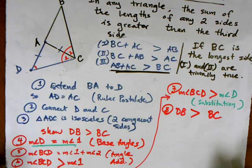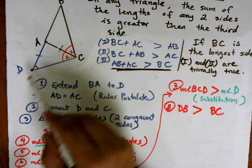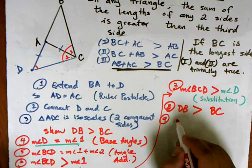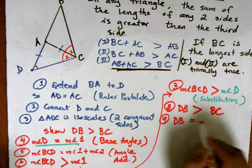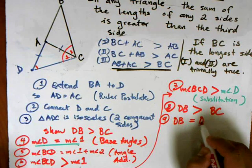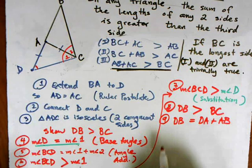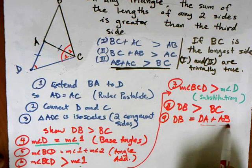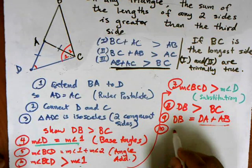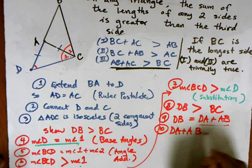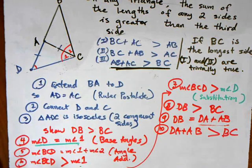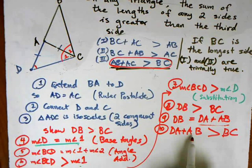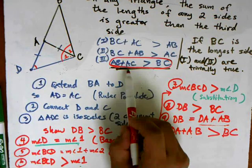Now I'm almost done — I just have to do a little bit of substitution. DB is a combination of two smaller segments, so in my ninth step DB equals DA plus AB, by segment addition. Then I can substitute this in: DA plus AB is greater than BC. We have AB in there and BC in there, and the one last thing I need is to get AC in here.